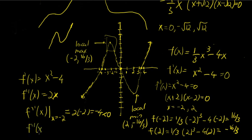Similarly, if we evaluate f''(x) at x = positive 2, we get 2 times positive 2 is 4, which is greater than 0. So this tells us that the function is concave up at x = positive 2, and we'll have a local minimum.